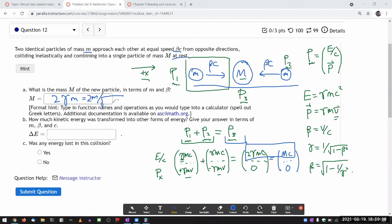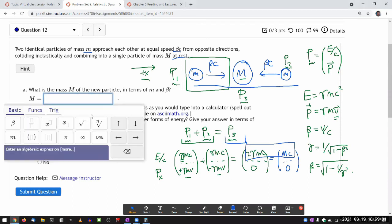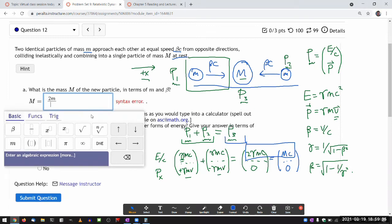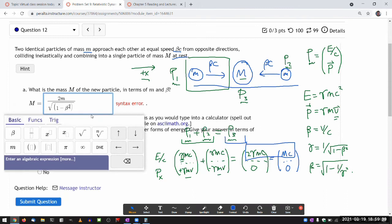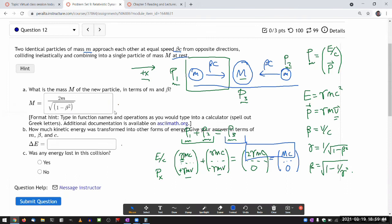So this is going to be two small m divided by square root of one minus beta squared. I guess I can just plug that in: 2m divided by square root of one minus beta squared. I'm just typing these symbols—you can also use the entry tool here. Okay, that's the mass of the new particle.